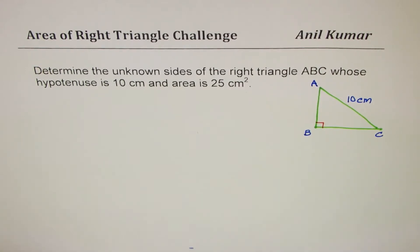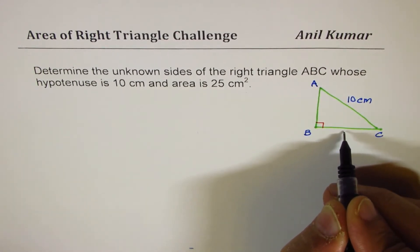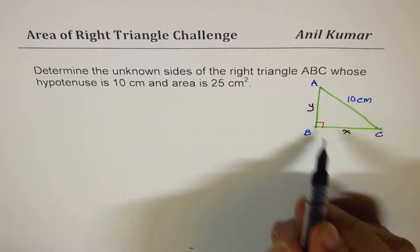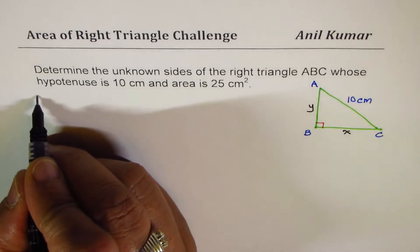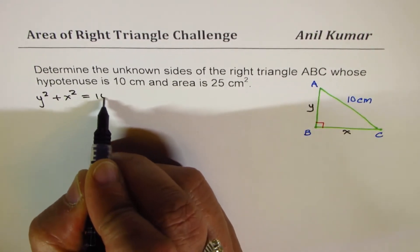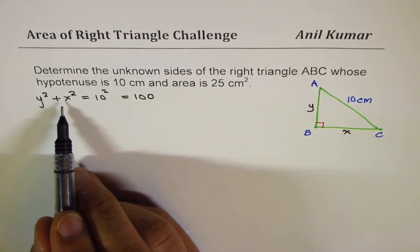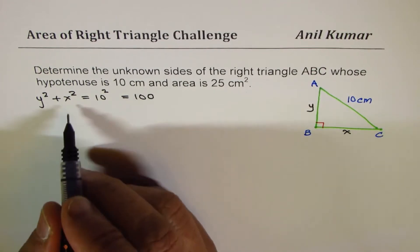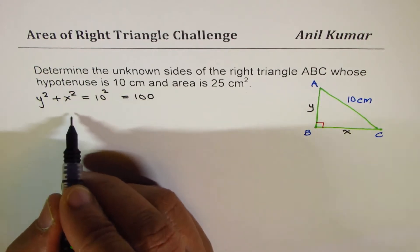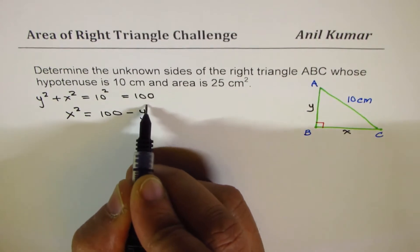Now, let us call these lengths as X and Y. So let's say we'll call this as X and this as Y. Now, since it is a right triangle, we know that Y squared plus X squared equals to 10 squared which is 100. We could write one variable in terms of another. So from this equation, we could write X squared equals to 100 minus Y squared.